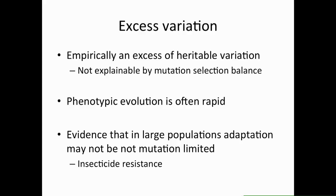However, other fields have made observations that seem to bring this model into question. When we measure heritable variation in populations, there is more than can be explained by mutation-selection balance alone. Also, when people work on phenotypic evolution, they often find that adaptation is very rapid — much more rapid than you would expect if adaptation is mutation limited. There's also evidence that populations are not mutation limited, where multiple beneficial mutations accumulate on a single haplotype before fixation, such as in insecticide resistance.